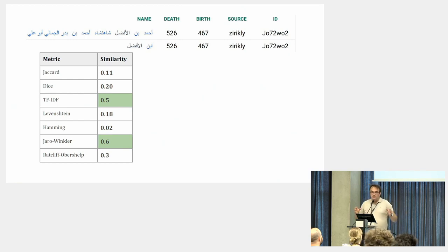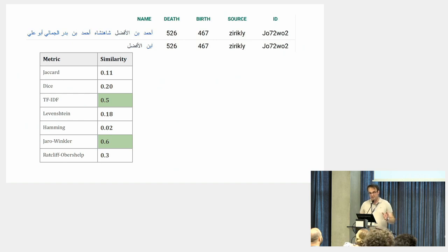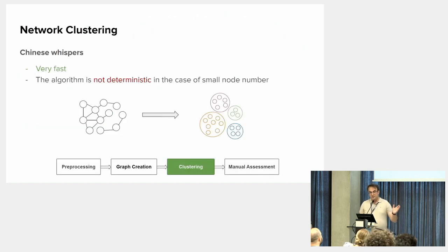Our idea was to use a combination of these metrics with weighting — for each metric we use some weight. Our results are experimental for now. For example, we use Jaccard with TF-IDF including Levenshtein. After we built a similarity matrix, we move from the similarity graph to clusters using the Chinese Whispers clustering algorithm. It's a very fast algorithm, but it is not deterministic for small node numbers. In our case we have enough nodes, so we use this algorithm to do the clustering.